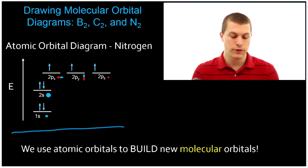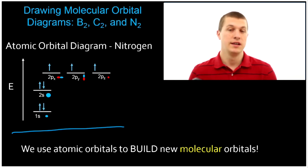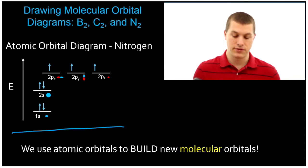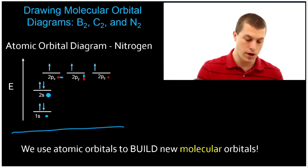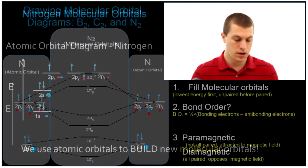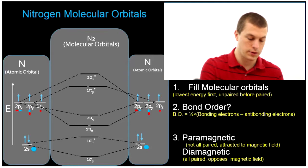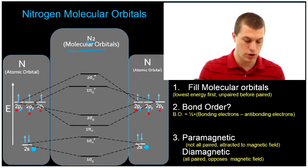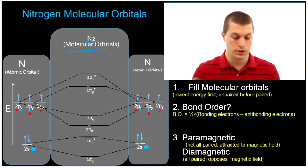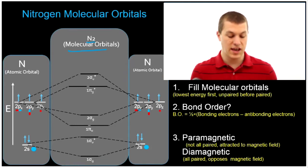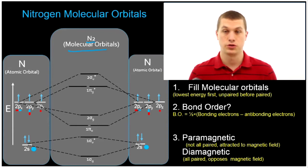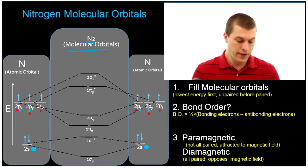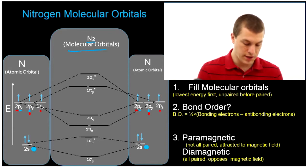The reason that we're focusing on B2, C2, and N2 in this video is that they all have the same order of molecular orbitals. If you look here in the center, I've drawn the molecular orbitals, and these same molecular orbitals are true for all three of those molecules — B2, C2, and N2. They go in the same order.